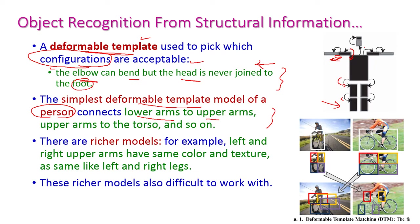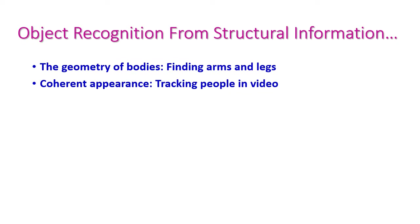Some richer models are also available. For example, the left and right upper arms have the same color and texture, as do the left and right legs. But these richer models are very difficult to work with. This diagram also explains the deformable template for a bicycle.